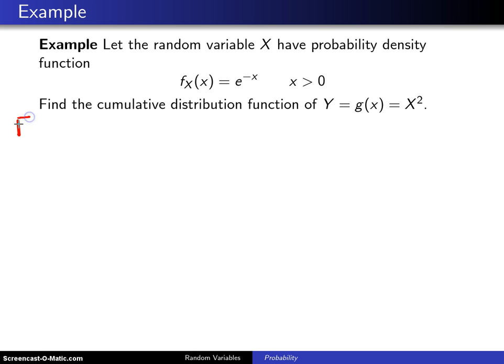Same as last time, we start out by finding F_X(x), which will be the integral from 0 to x of f(w) dw, and so that will be e^(-w) dw, and that integral is going to be -e^(-w), and that is evaluated from 0 to x.